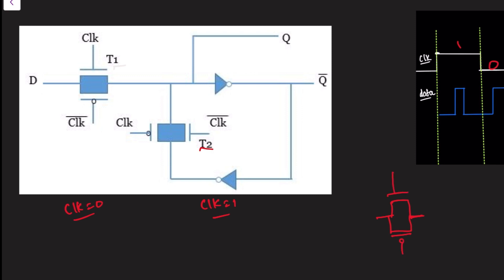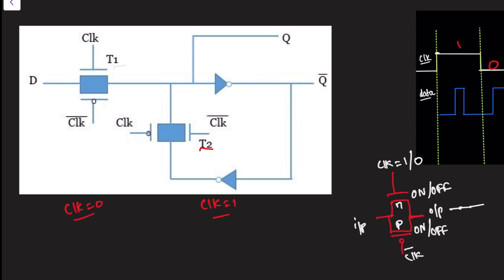To understand how the transmission gate acts as a closed or open switch, here is a simple explanation. This side is the NMOS and this is the PMOS. NMOS will be on when the gate equals logic high. If you treat this as clock and this as clock-bar, when clock is one, the NMOS is on and the PMOS is also on because it gets zero from the inversion of clock. So whatever you transmit as input will come as output — it acts like a closed switch. When clock is zero, both NMOS and PMOS are off, so it acts like an open switch.